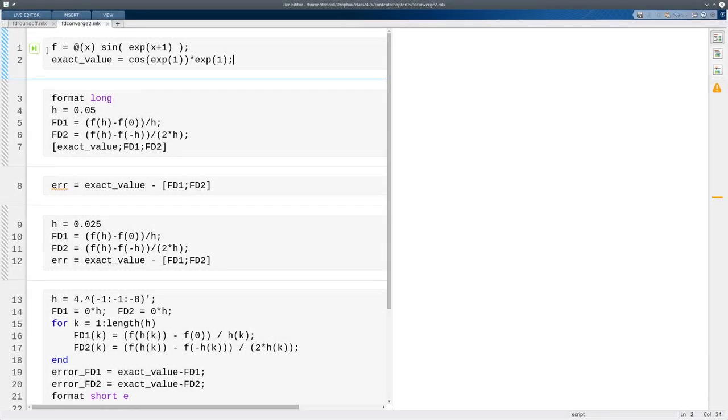So here I define a smooth function, and this is the exact value of its derivative at zero. So here I'm going to set a value for h, compute the forward difference which is first order accurate, compute the second order center difference, and then compare the exact value to the two finite difference values.